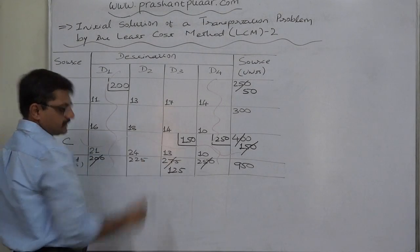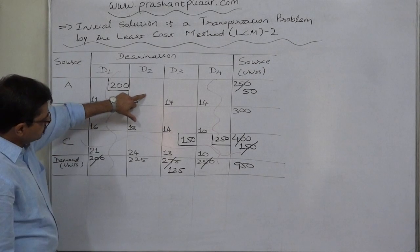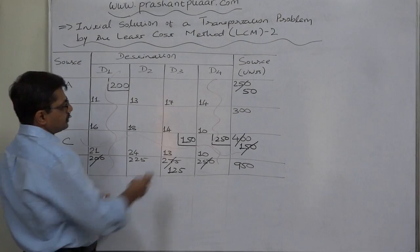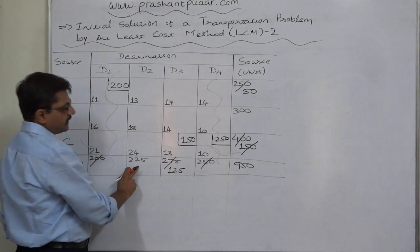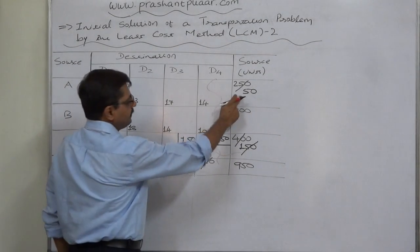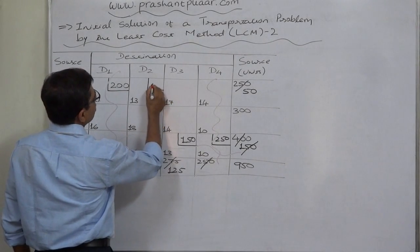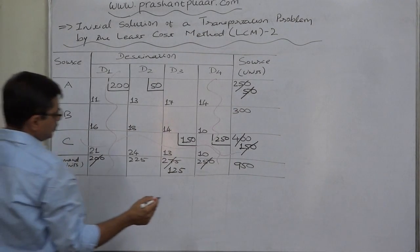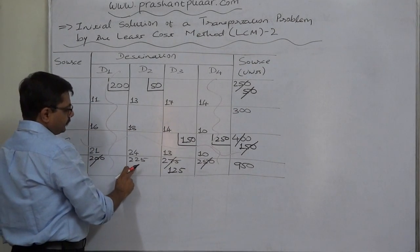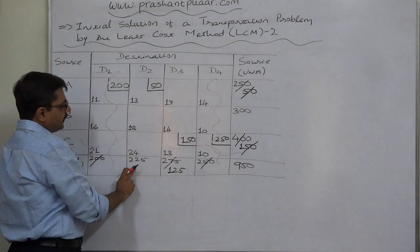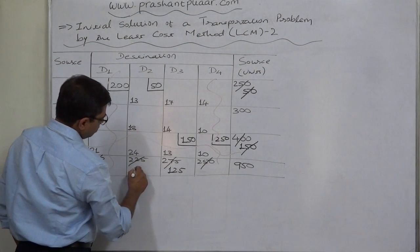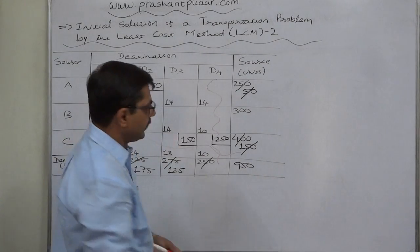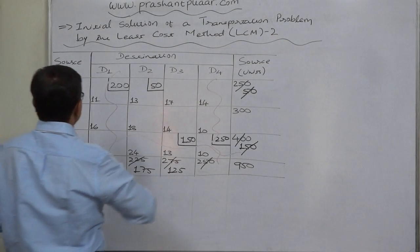From the remaining four cells, the cell with the least cost is A-D2 with a cost of 13. Allocation: demand 225, supply 50 — lower is 50. With this allocation, supply of source A is exhausted. Demand of D2 was 225, of which 50 is now satisfied, leaving 175 still unsatisfied. We cancel the row of source A.